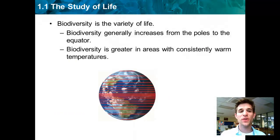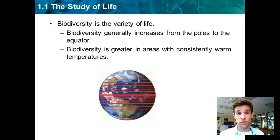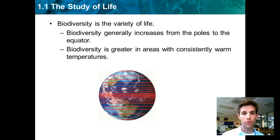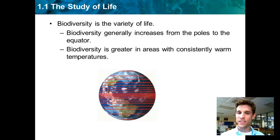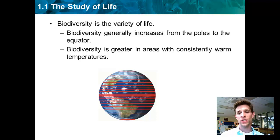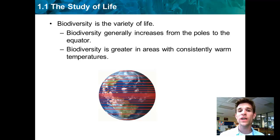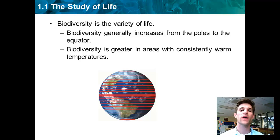Our next important vocabulary term is biodiversity. It simply means the variety of life — the number of different kinds of living things in a given place or overall on Earth. If you start at the poles, you'll find certain kinds of organisms, probably not a lot. As you move closer to the equator, you'll find more and more biodiversity, or more types of living organisms — more species. That applies to both aquatic and land-based ecosystems. When you have consistently warm temperatures, you're also going to have higher diversity, which is what governs the poles-to-equator pattern.